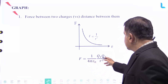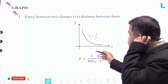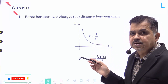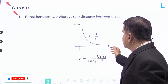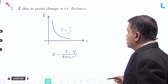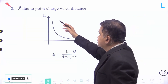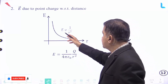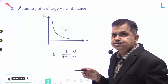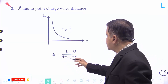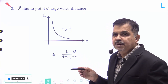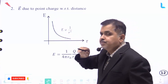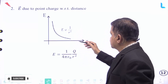Coulomb's Law is given by F equal to 1 by 4 pi epsilon naught into Q1 into Q2 divided by r square, showing force is inversely proportional to r square. Similarly, the graph of electric field due to a point charge with respect to distance shows E inversely proportional to r square, given by E equal to 1 by 4 pi epsilon naught into capital Q divided by r square.